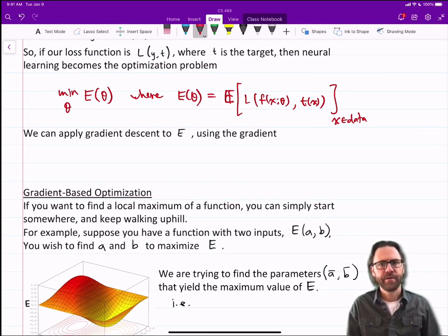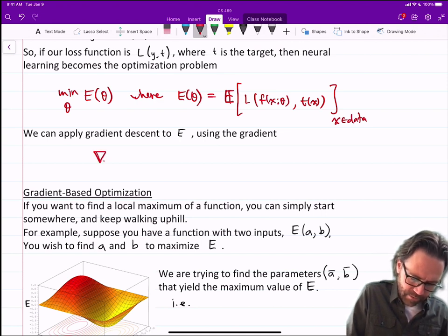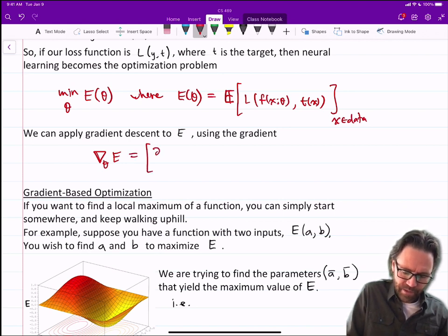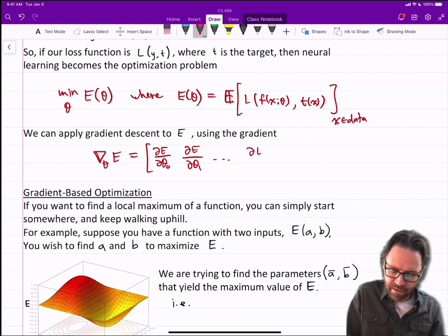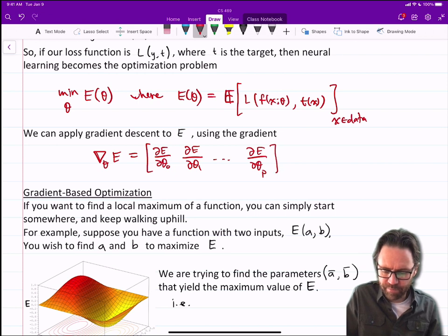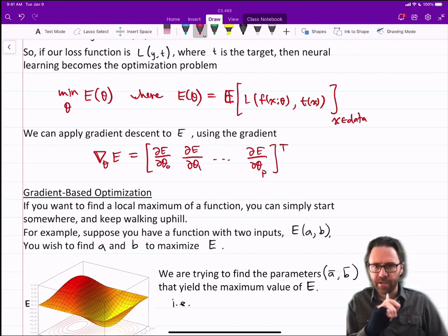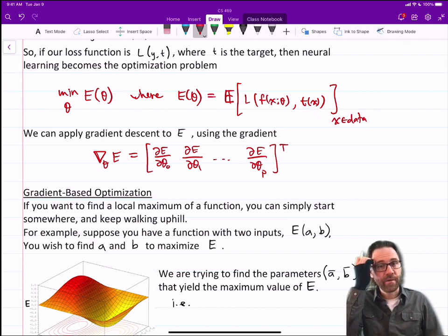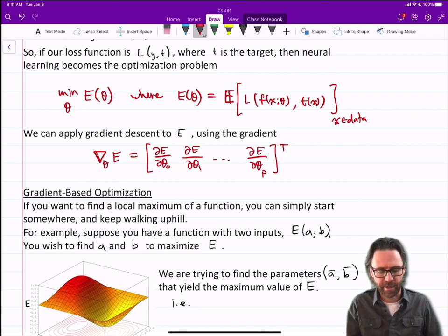So we can apply gradient descent to E using the gradient. So the gradient, just as a reminder, it's often written like this. Gradient with respect to theta of E is a vector: ∂E by ∂theta_0, ∂E by ∂theta_1, and so on to ∂E by ∂theta_p, where we have p parameters, and transpose because typically in math we represent vectors as columns. So it's basically listing the partial derivative of your cost function with respect to each of your parameters. You might have hundreds or thousands or even millions of weights and biases. That gradient vector is hundreds or thousands or millions of elements long. That doesn't matter.